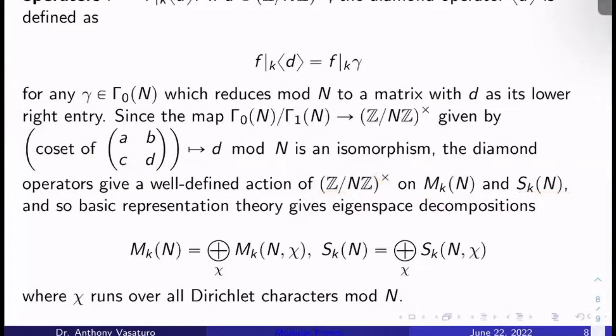And then because of this fact, basic representation theory steps in. And you can see this in Fulton-Harris chapter one, chapter two. You can see that M_k(N) and S_k(N) have eigenspace decompositions. M_k(N) is the direct sum over all Dirichlet characters mod N of S_k(N,χ).